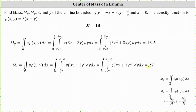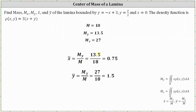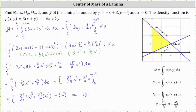Now that we have the mass and both moments, we can determine the center of mass given by x-bar comma y-bar. The x-coordinate of the center of mass is 13.5 divided by 18, which is 0.75. The y-coordinate of the center of mass is 27 divided by 18, which is 1.5. Going back to the bounded region R, the point 0.75 comma 1.5 is approximately here, which is the center of mass.